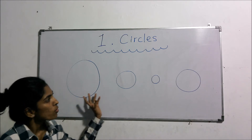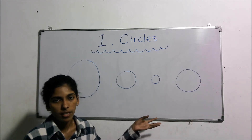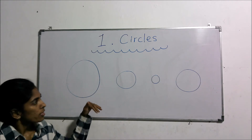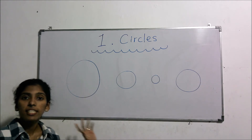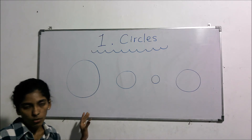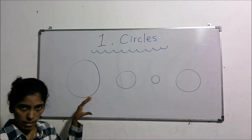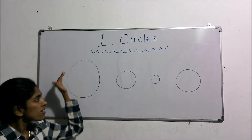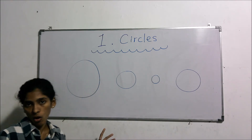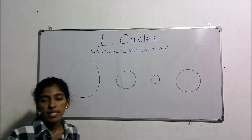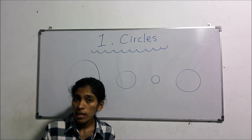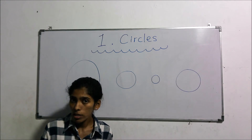Here I have drawn a few circles. For a completely curved line, we call it a circle. For completely curved figures we call them circles. As I mentioned earlier, in our day to day life we can observe circular shapes.